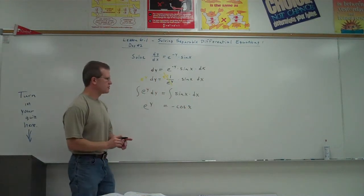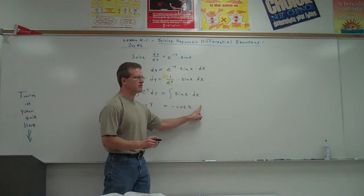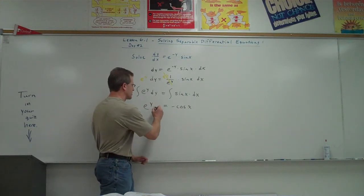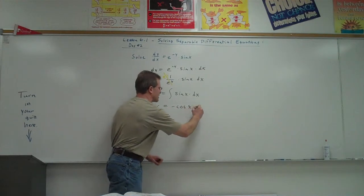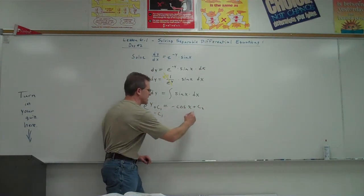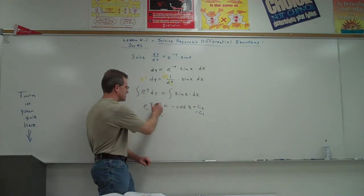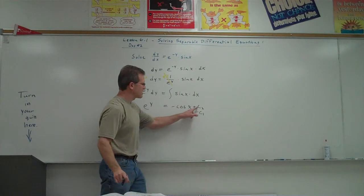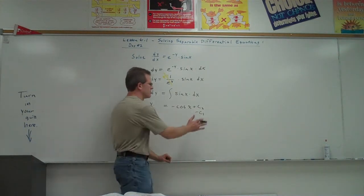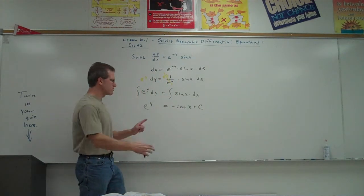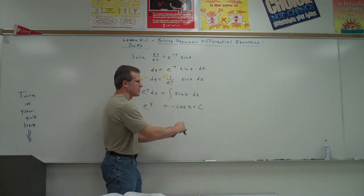Now technically you should put plus a constant, a plus c on both sides. But if I put plus constant 1 here and then plus constant 2 here, so you have two constants, then if you subtract constant 1 on both sides, this would cancel out. If you take constant 2 minus constant 1, you're going to get another constant. So generally what we do is just put a plus c on the right side, and that's going to represent both these constants being combined together somehow.